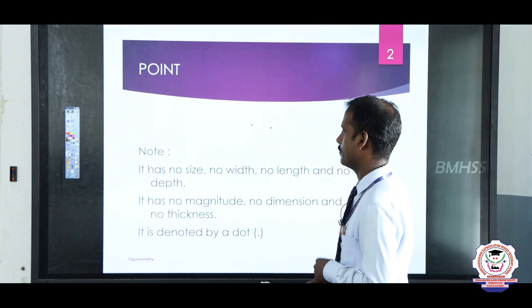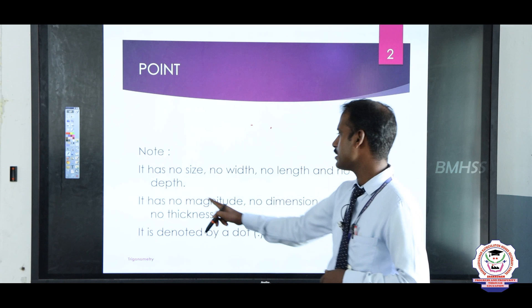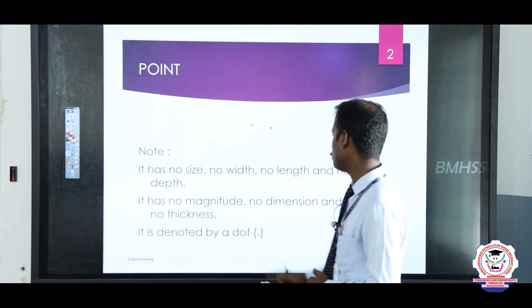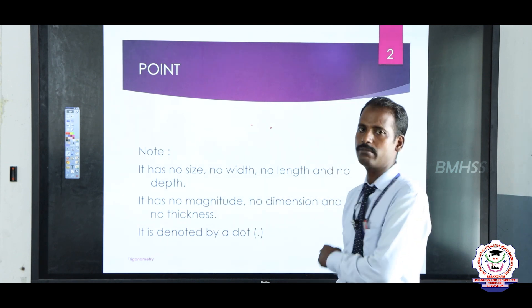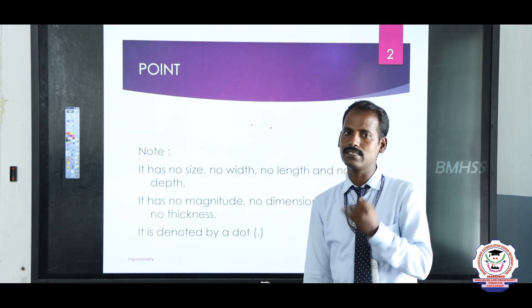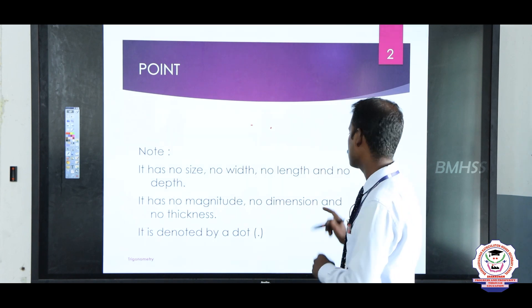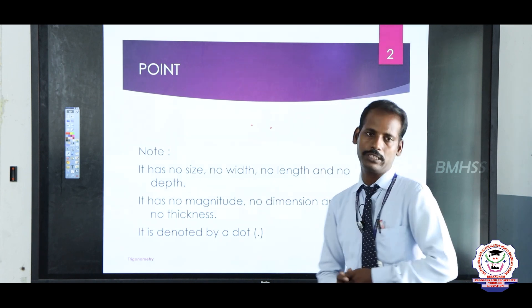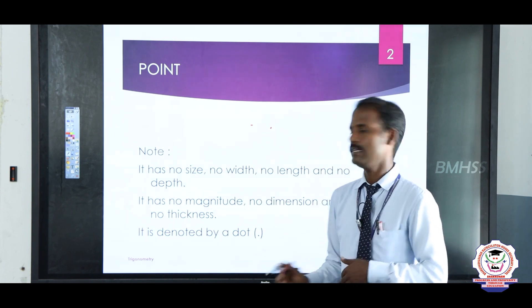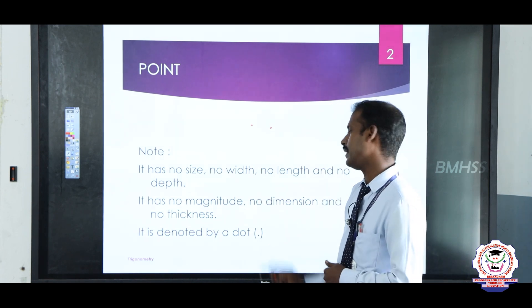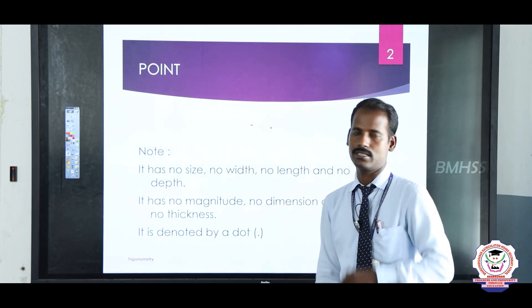Next, a point has no magnitude, no dimension — that is, no length, no breadth, no height — and no thickness. It is denoted by a dot.